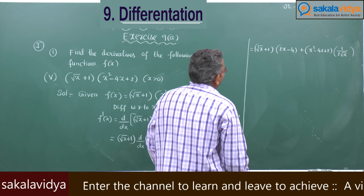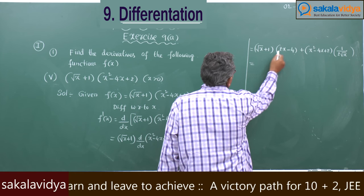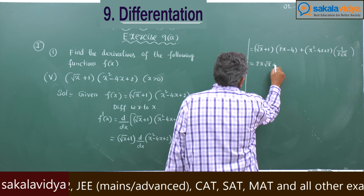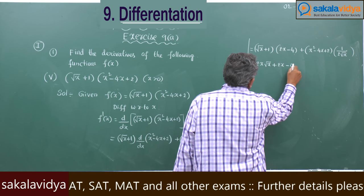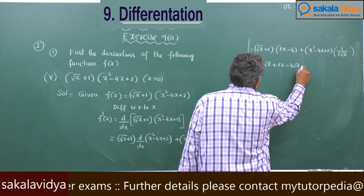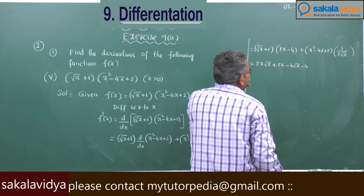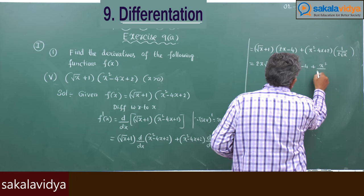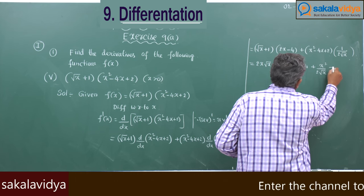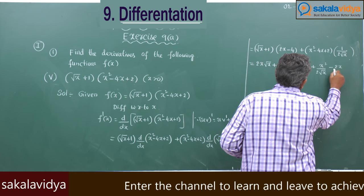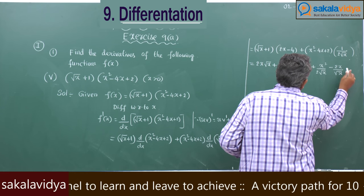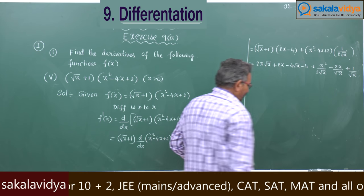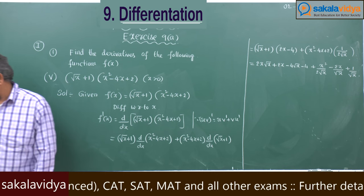So we get: 2x√x + 2x - 4√x - 4 + x²/(2√x) - 2x/(√(x+1)·√x). Let us move to the next problem.